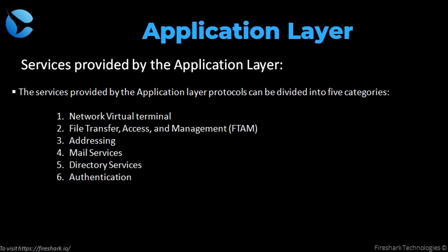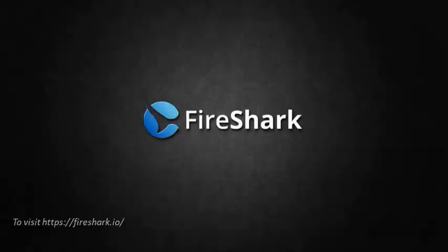Directory services: an application layer contains a distributed database that provides access for global information about various objects and services. Authentication: it authenticates the sender or receiver of a message, or both. That's it from today's video. We will meet again in our next video. Thanks for watching.